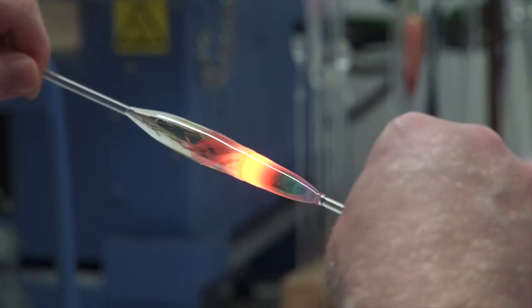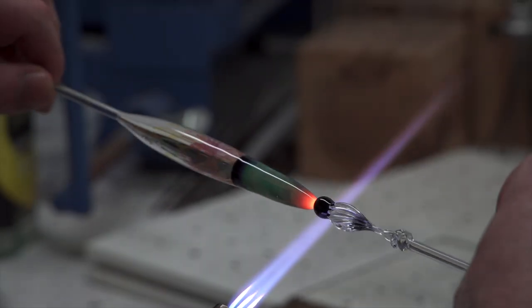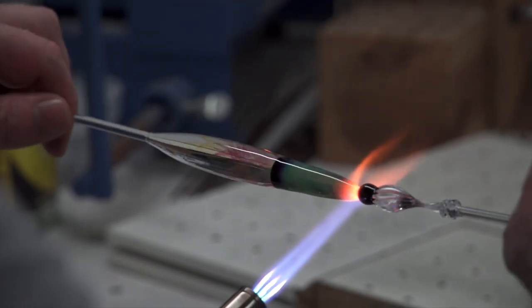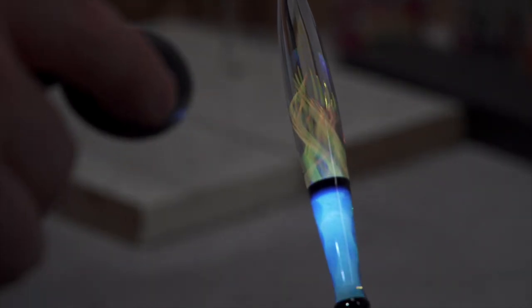And the handle and the section is taking shape. And then attaches the nib with its black base onto the handle. He works all that in the torch for a while and this is the finished pen out of the fire.